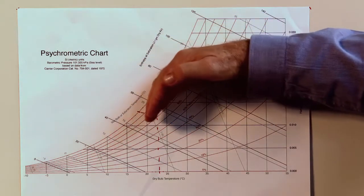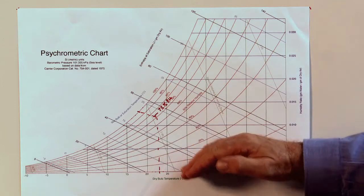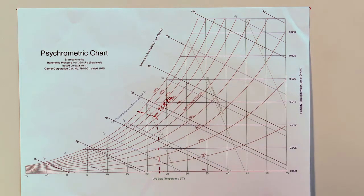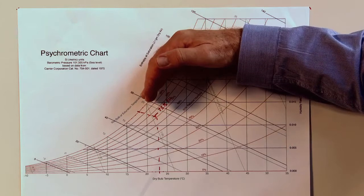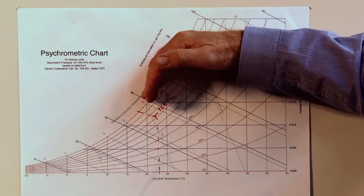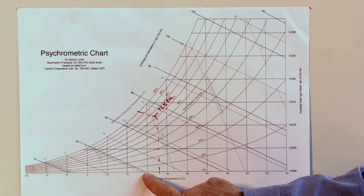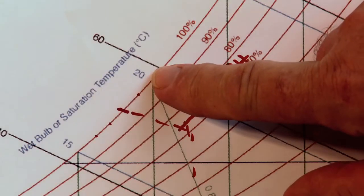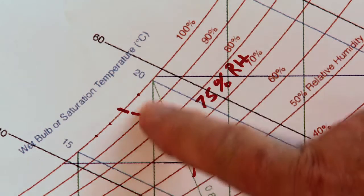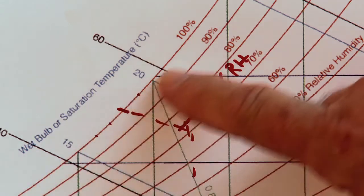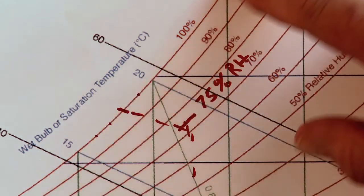Moving across the chart we have the relative humidity. Where the relative humidity is 100%, the dry bulb temperature and the wet bulb temperature are exactly the same — the intersection tells us that it is 100% relative humidity.